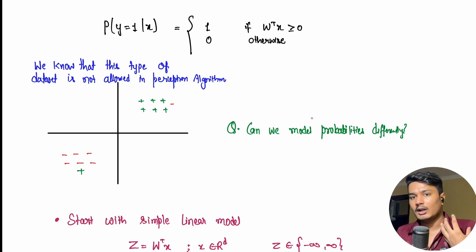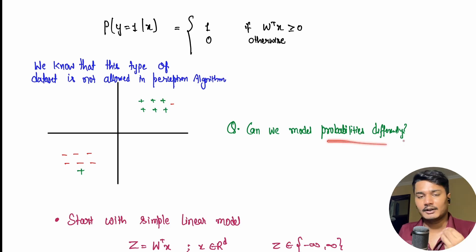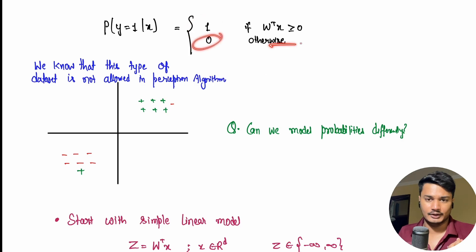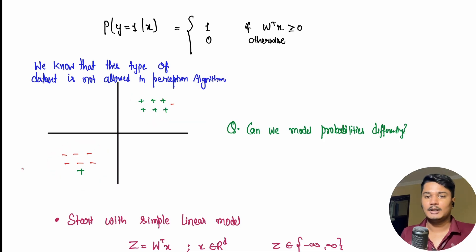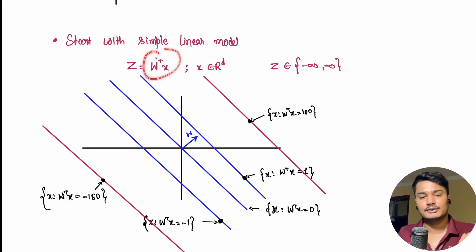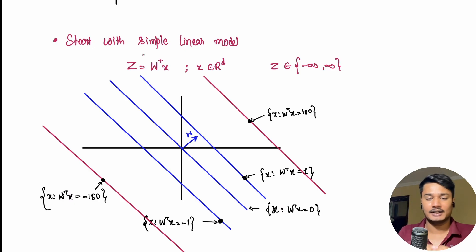So our idea is: can we model probabilities differently? In the perceptron, w^T x > 0 marks as 1 and otherwise 0. Can we have a different model that can tackle this kind of dataset? Let's start with a simple linear model: z = w^T x for all x in R^d. This z is basically a score — for each data point we are trying to assign some score.